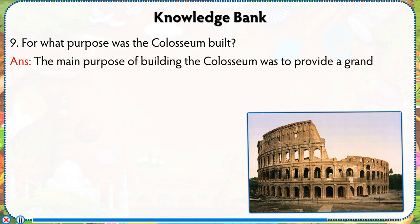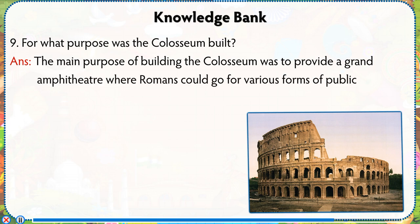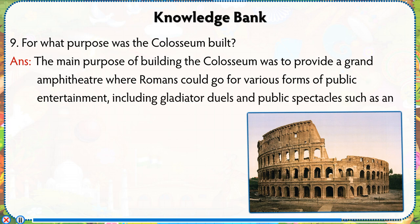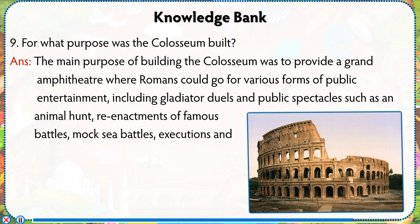Number 9: For what purpose was the Colosseum built? Answer: The main purpose of building the Colosseum was to provide a grand amphitheater where Romans could go for various forms of public entertainment, including gladiator duels and public spectacles such as animal hunts, re-enactments of famous battles, mock sea battles, executions and drama.